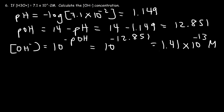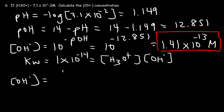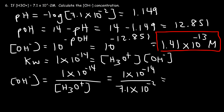There's another way to get the same answer using the autoionization constant for water. KW, which is 1 times 10 to the minus 14, equals the product of the hydronium ion concentration and the hydroxide concentration at 25 degrees Celsius. So the hydroxide concentration equals KW divided by H3O+, which is 1 times 10 to the minus 14 divided by 7.1 times 10 to the minus 2. You get the same answer: 1.41 times 10 to the minus 13.